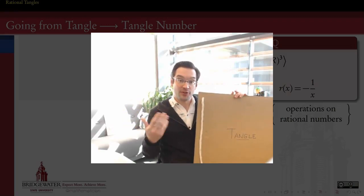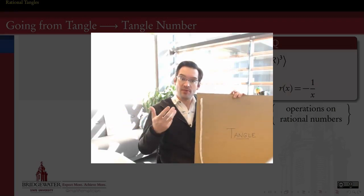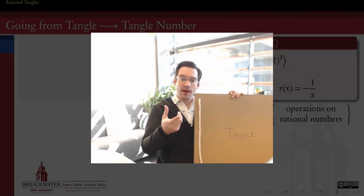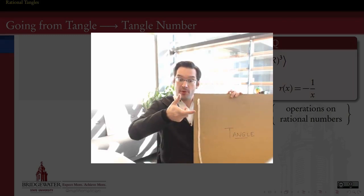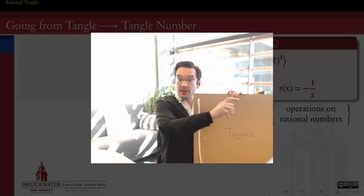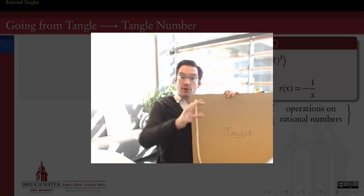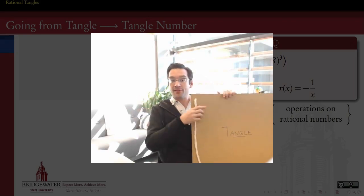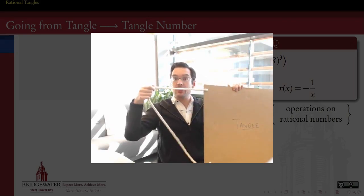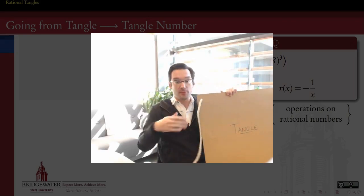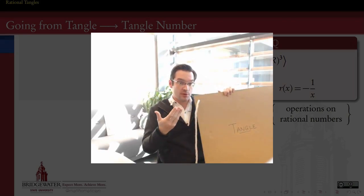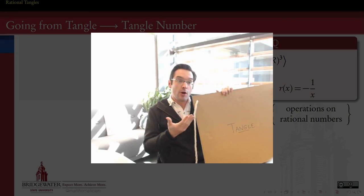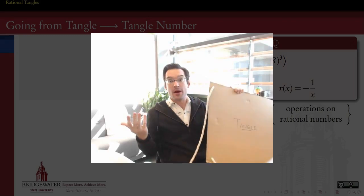Now we know how rational tangles can be constructed from empty tangles by applying a set of operations. Just by twisting and by rotating, we can build a whole class of tangled up objects that we can then use to ultimately study something about knots.